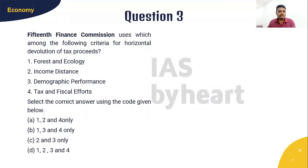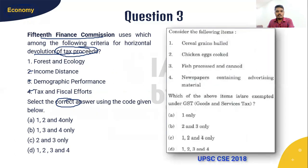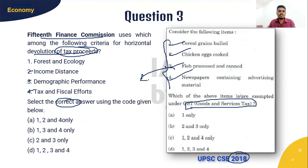Question 3 is from the economy topic: The 15th Finance Commission uses which among the following criteria for horizontal devolution of tax proceeds? There are four options and we should find the correct answer. This question has been modeled from the 2018 question paper. The 15th Finance Commission has become important for the upcoming prelims because it submitted two reports and changed the allocation of tax proceeds between center and states. I will give you 10 seconds to solve this question.